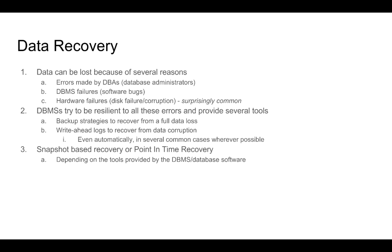It is important to think about data recovery and what guarantees we want from the very beginning, because data can be lost for several reasons — errors by database administrators, software errors in the DBMS, or hardware failures such as disk failure or disk corruption, which is a surprisingly common failure. To be resilient, we need to think about the recovery characteristics of our applications: how much time we want to spend recovering the entire database when our application is live. Most DBMS try to handle these errors fairly automatically. For example, in case of partial data corruption, databases try to recover automatically. As discussed with transactions in the last module, if a transaction could not complete entirely, the database detects the incomplete operations and is able to roll them back.